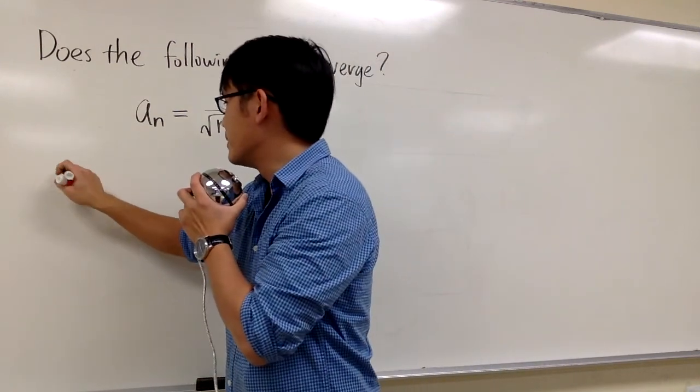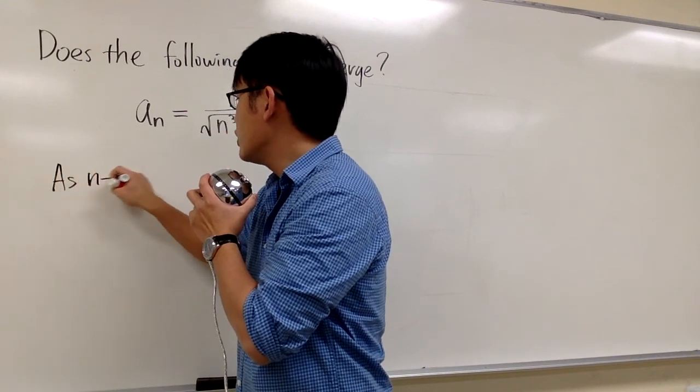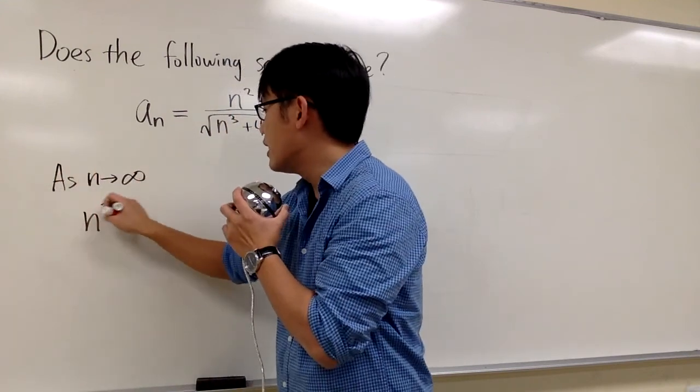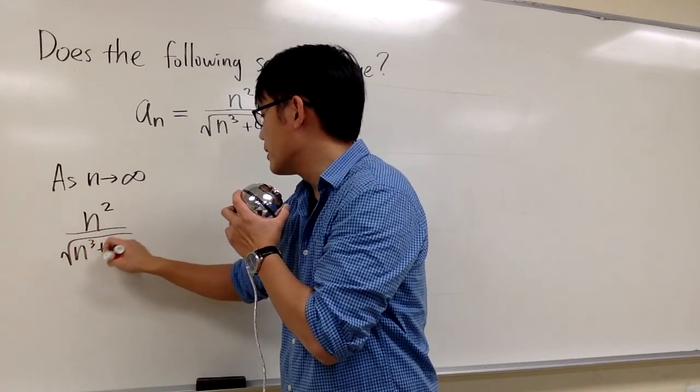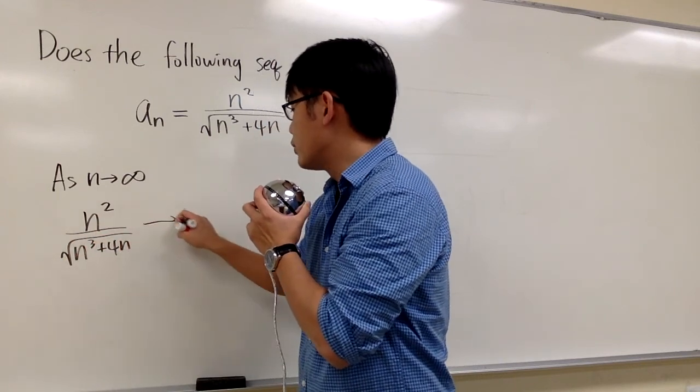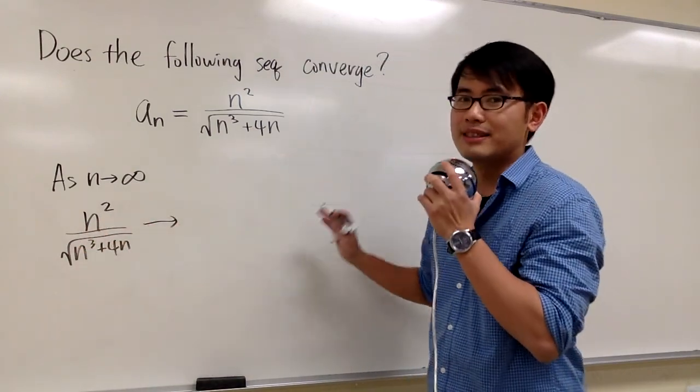Let's go ahead and check our limit. I will write down as n goes to infinity, and I'll write down the expression here: n² over √(n³ + 4n). I'll draw arrows to show that this approaches this, and approaches that, and so on.